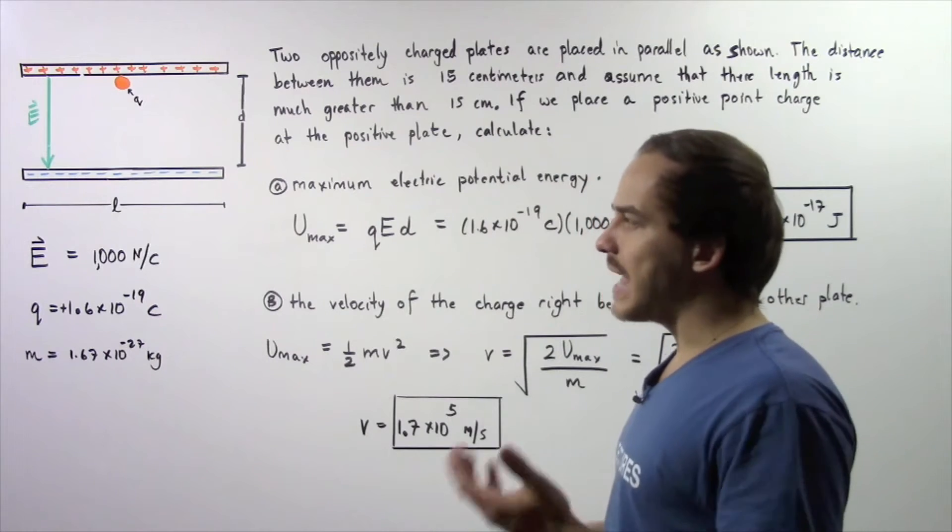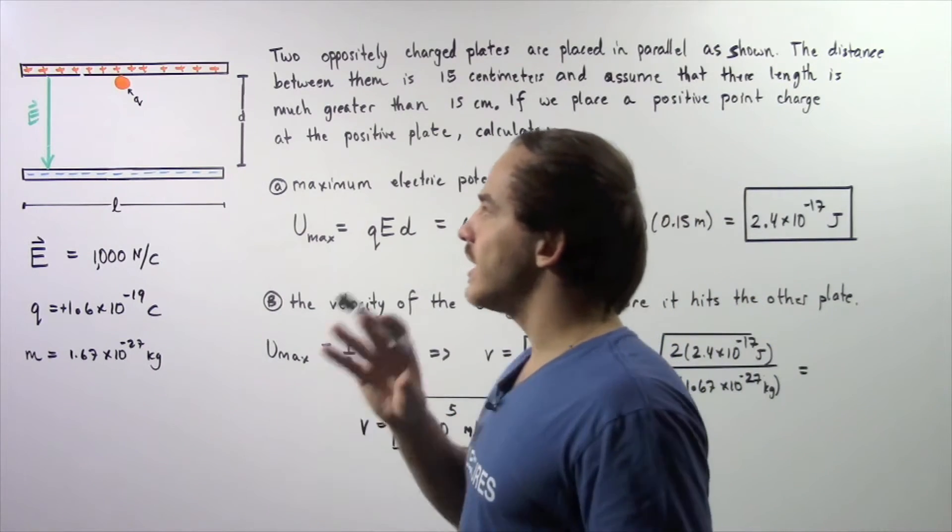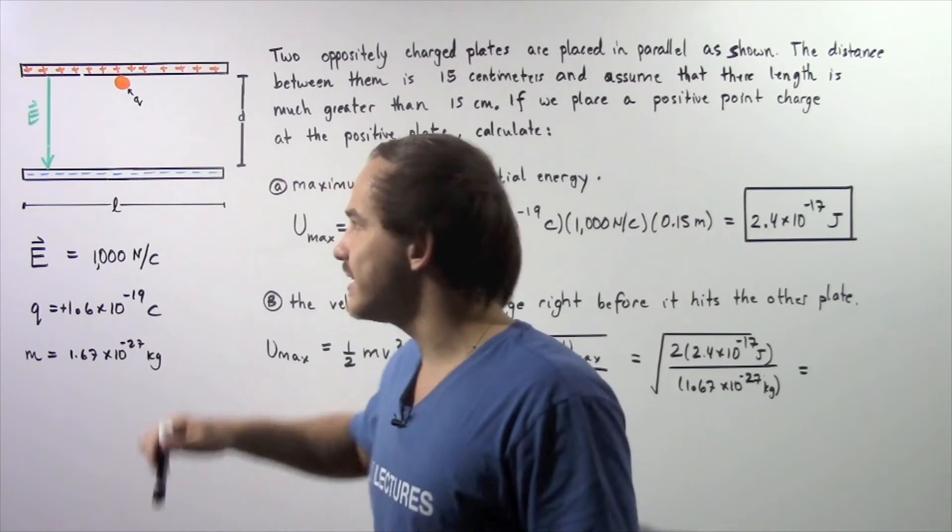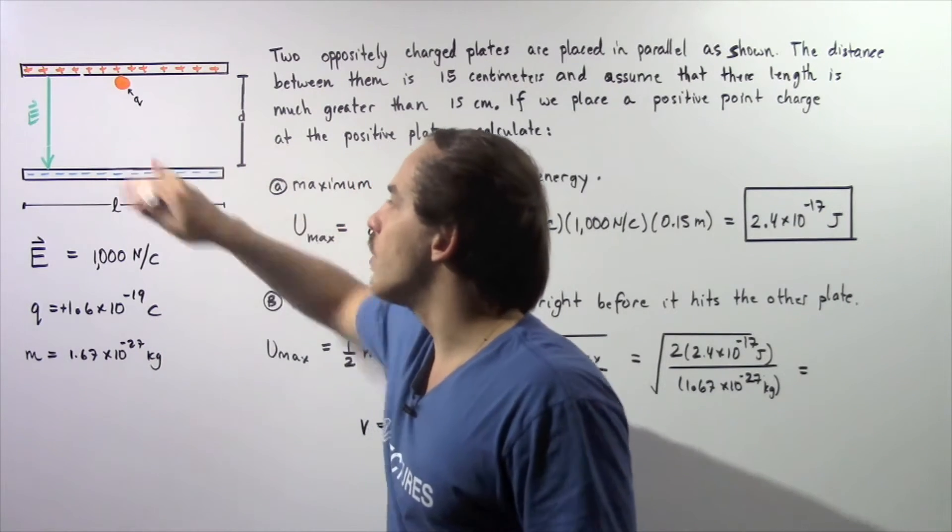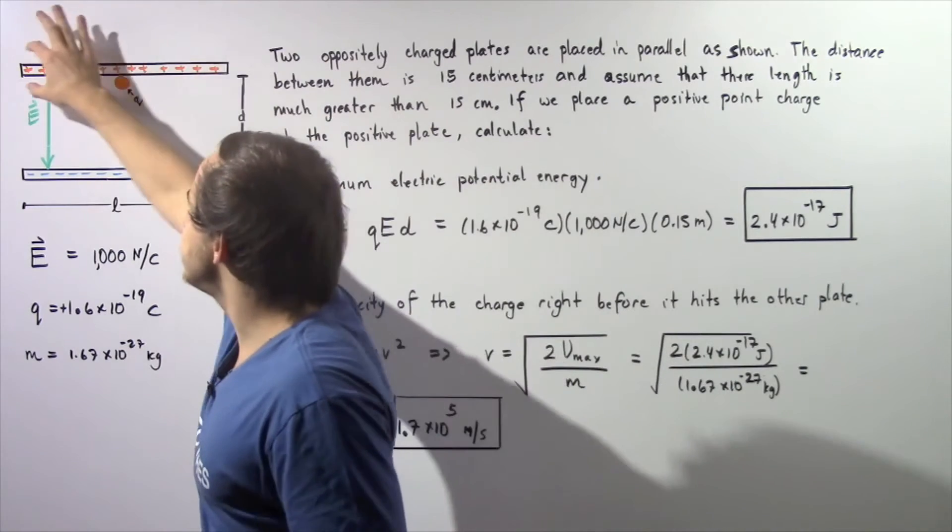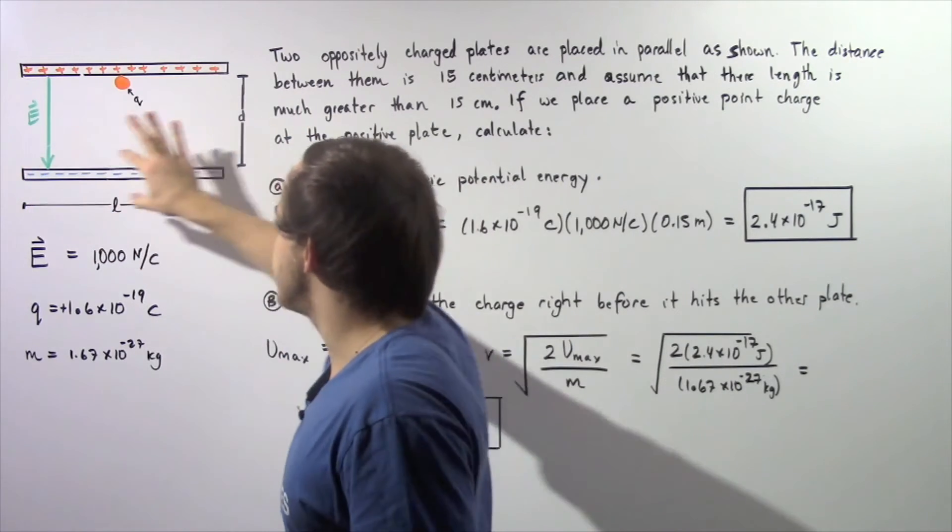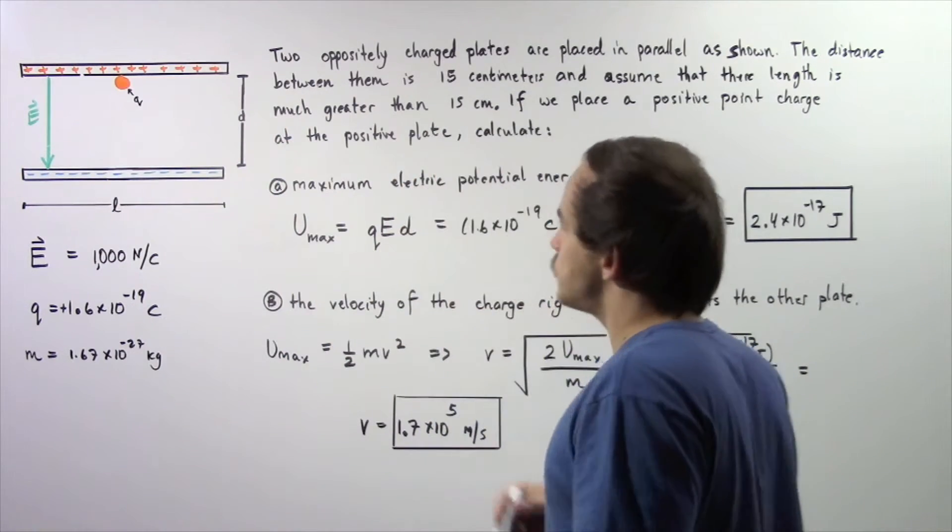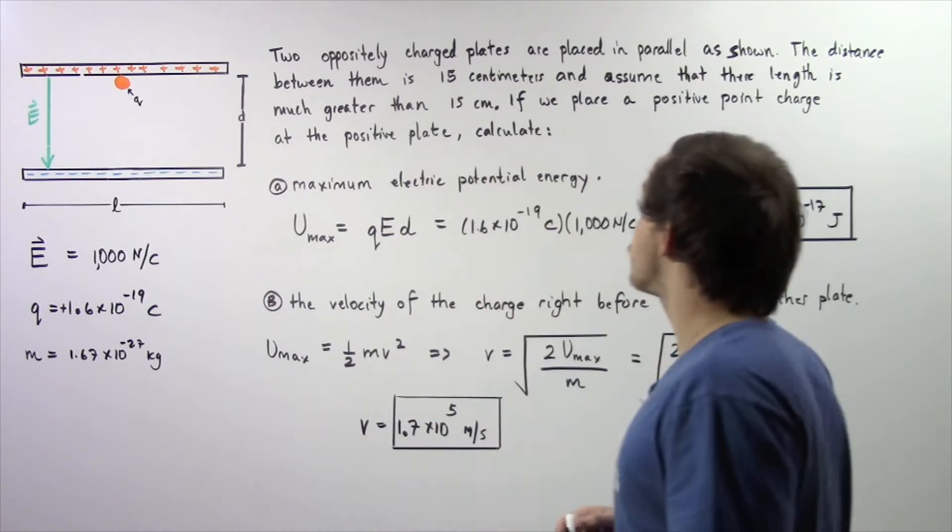That basically allows us to assume that the electric field is uniform, constant in the middle of our two plates. This is our positively charged plate and this is our negatively charged plate as shown by the positive and negative signs.